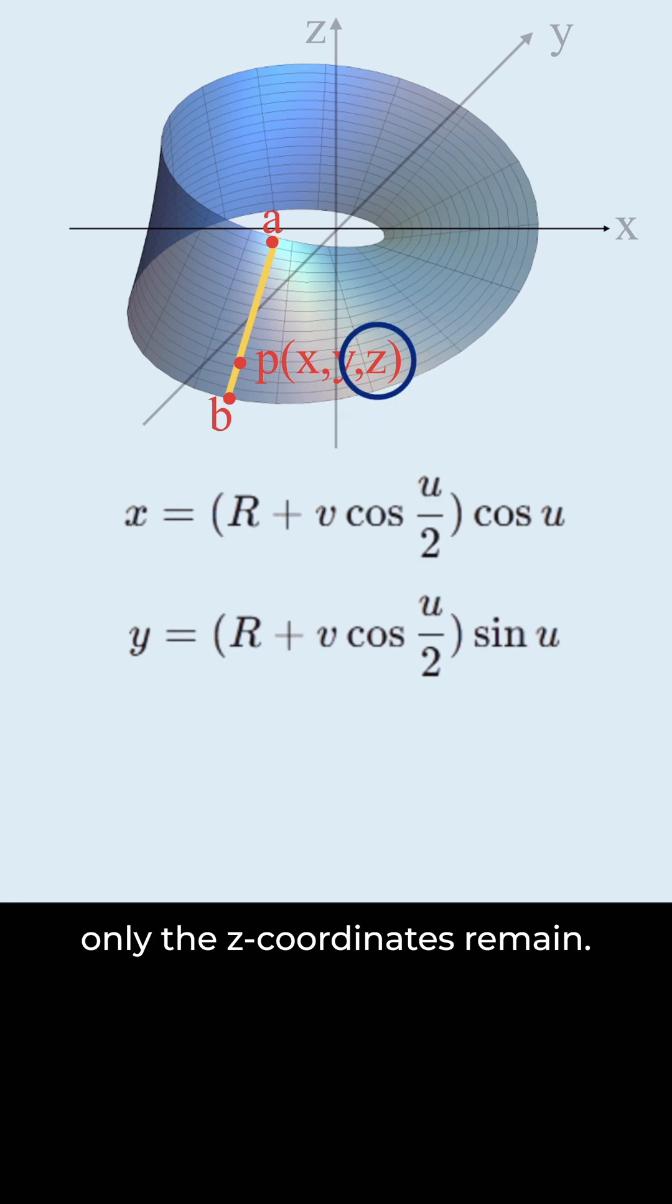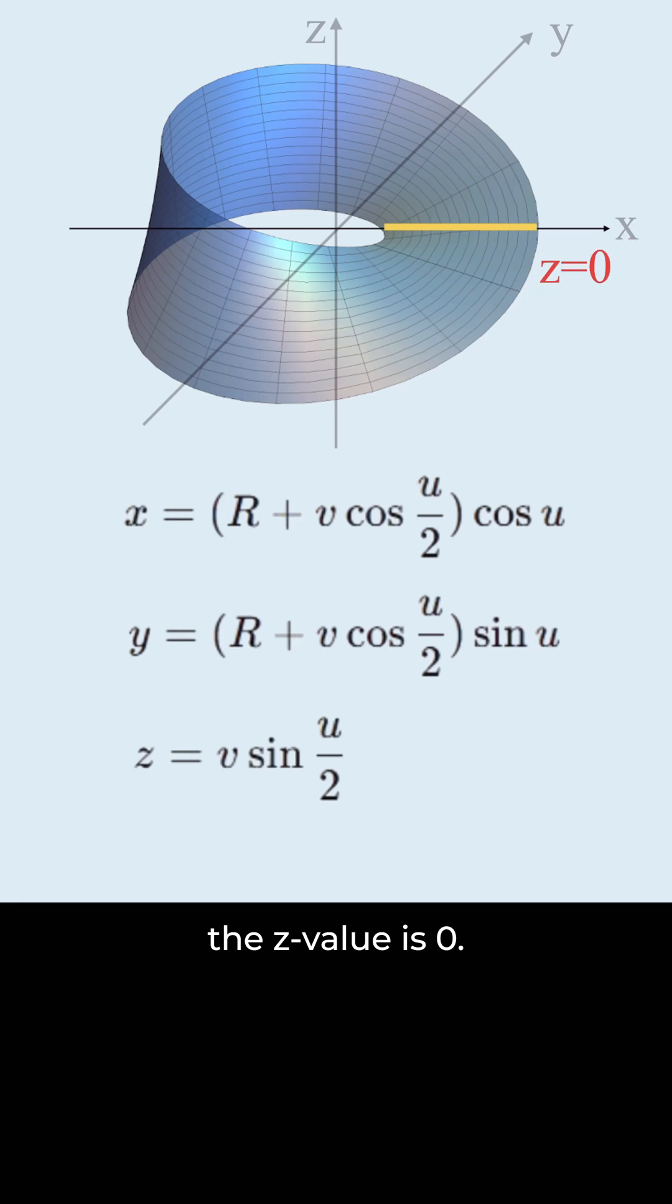Now, only the z coordinates remain. That equation is this. At the start, the z value is 0. Sine 0 degrees is 0. As the line moves, the z value does not change its sign. It starts from 0, reaches a maximum positive value, then returns to 0.